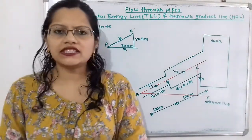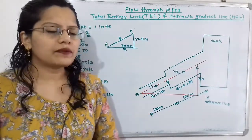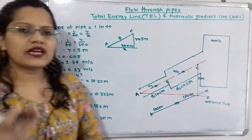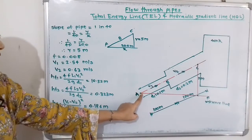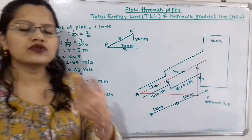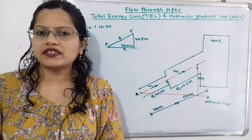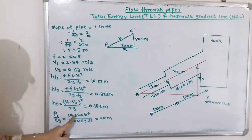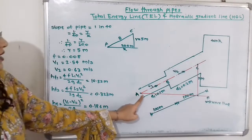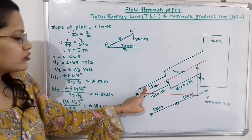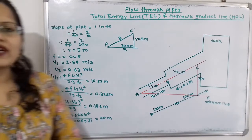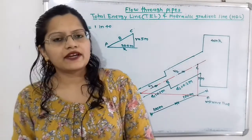Pressure intensity at point A is given as 19.62 N/cm². Converting to standard units: pressure head at A = P1/(ρg) = 19.62 × 10⁴ / (1000 × 9.81) = 20 meters. So the pressure head at A is 20 meters. The losses to account for are: head loss due to friction in pipe 1 (HF1), head loss due to friction in pipe 2 (HF2), and loss due to sudden enlargement (HE). These are the losses needed to draw the total energy line and hydraulic gradient line.